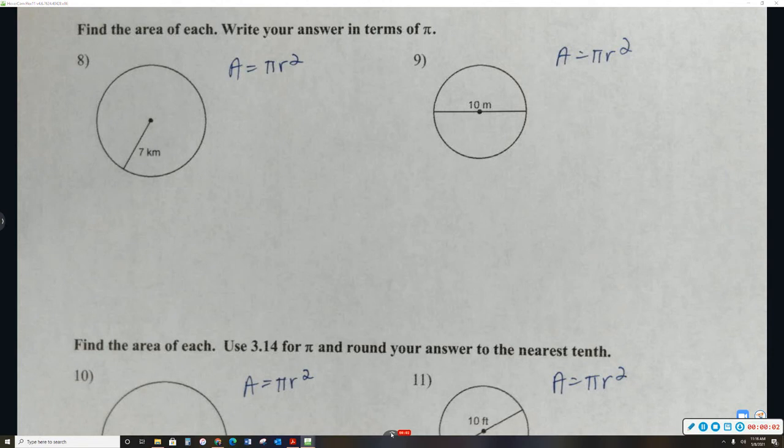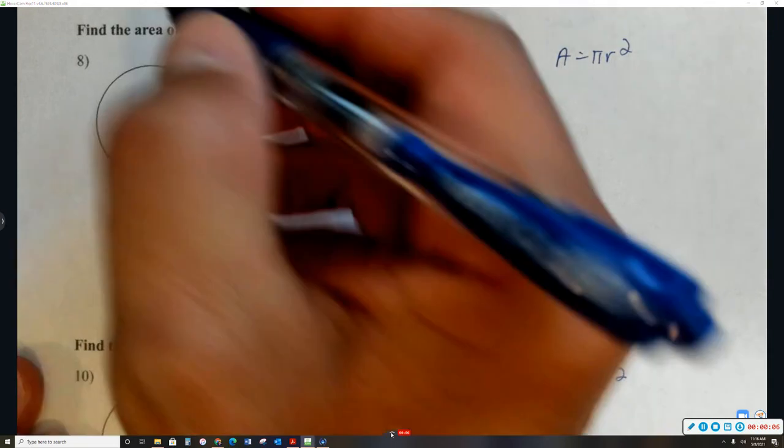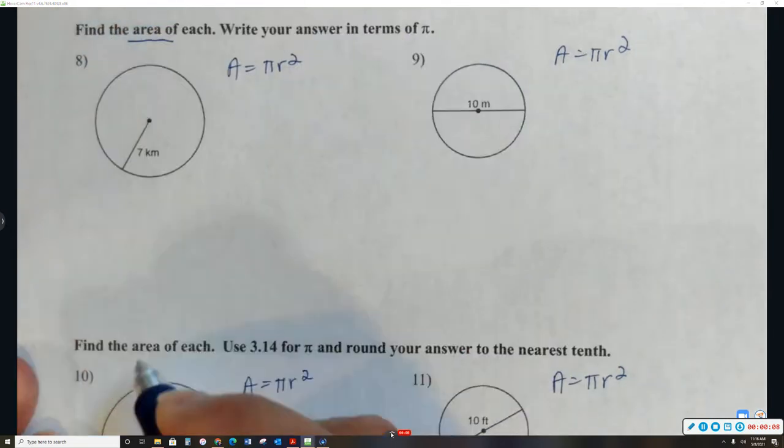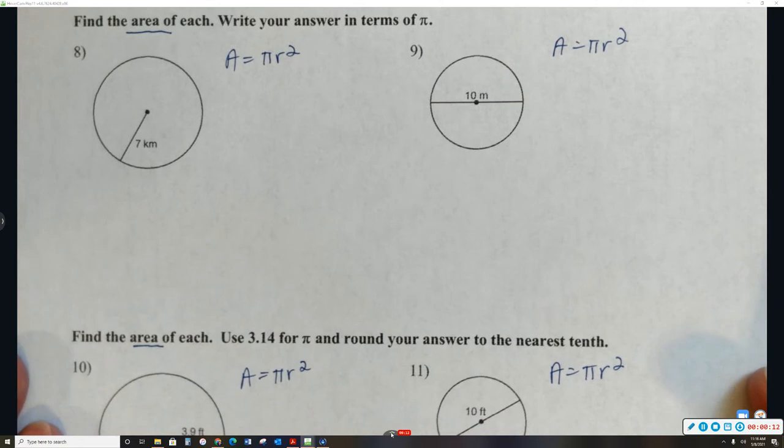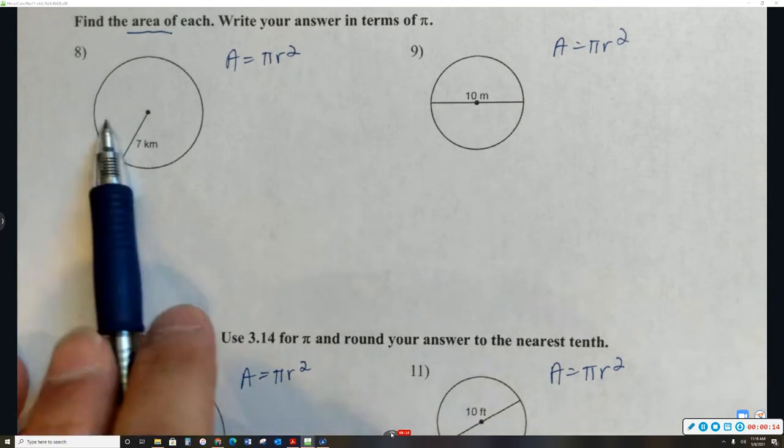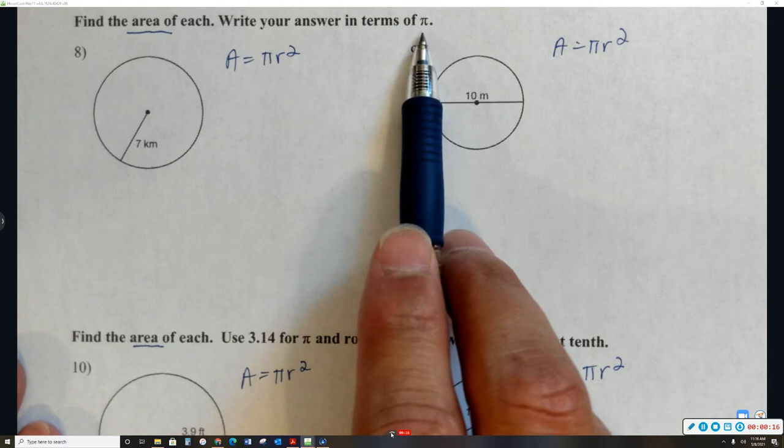So on 8, 9, 10, and 11, all of these are actually asking us to find the area of the circle. The difference is how the answer is going to be written. So for 8 and 9, they want us to leave pi in our answer.